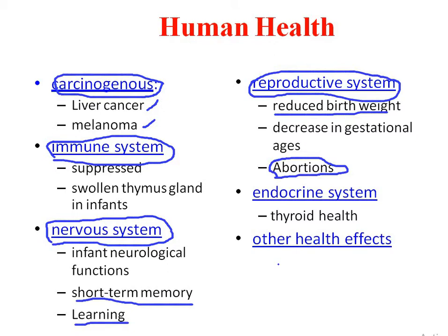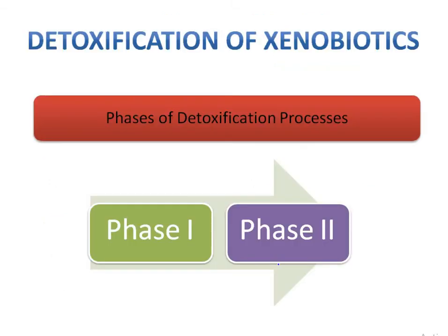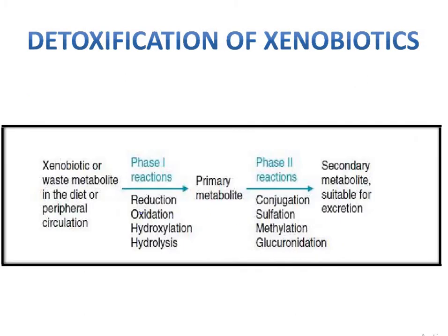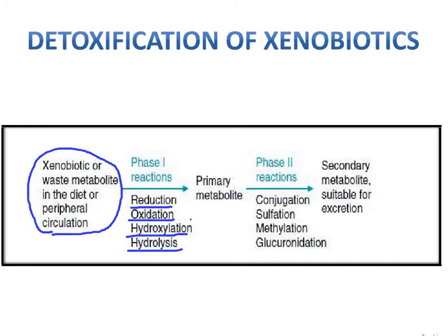When we talk about how detoxification of xenobiotics happens, we can separate it into two phases — Phase 1 and Phase 2. In Phase 1, four different processes happen in our body: reduction, oxidation, hydroxylation, and hydrolysis. Due to these Phase 1 reactions, primary metabolites are produced.